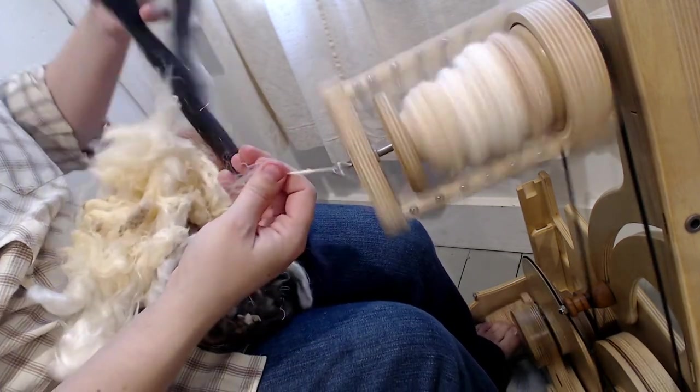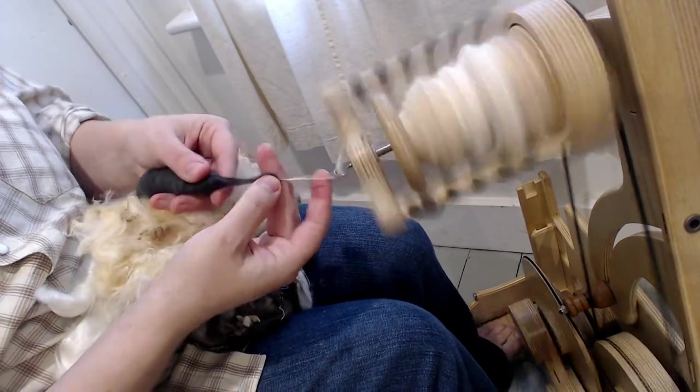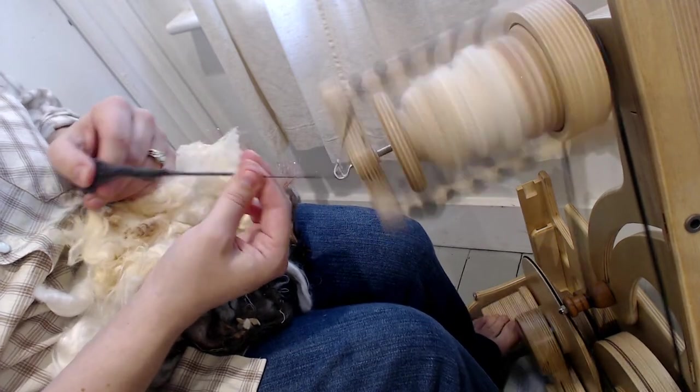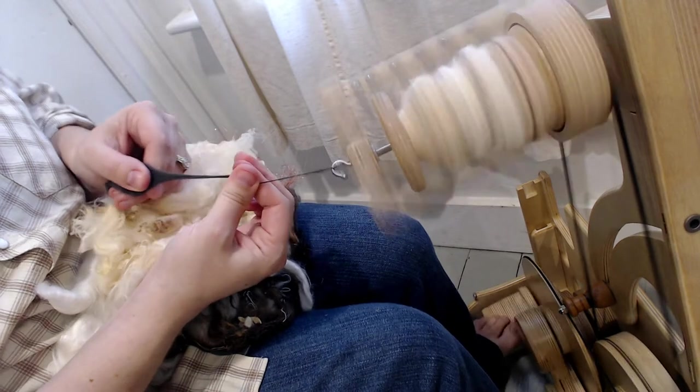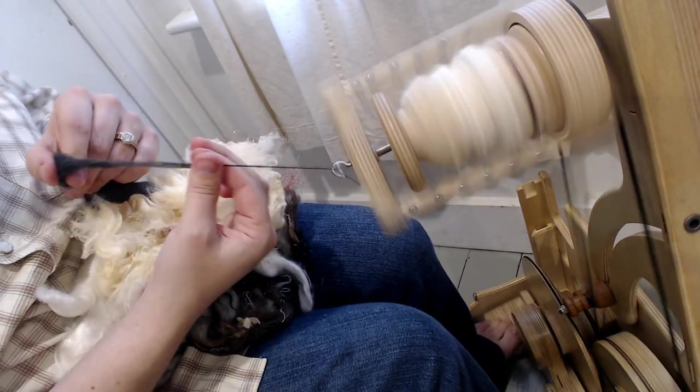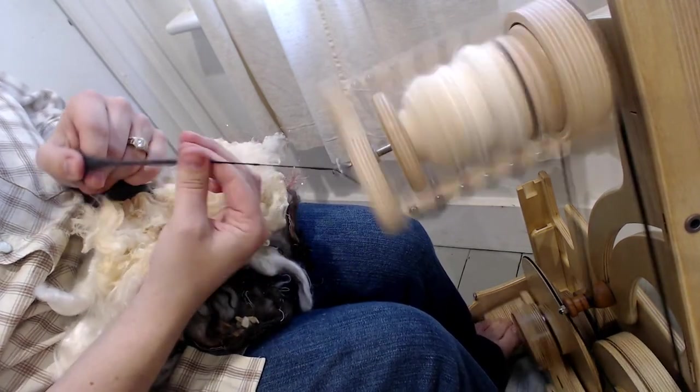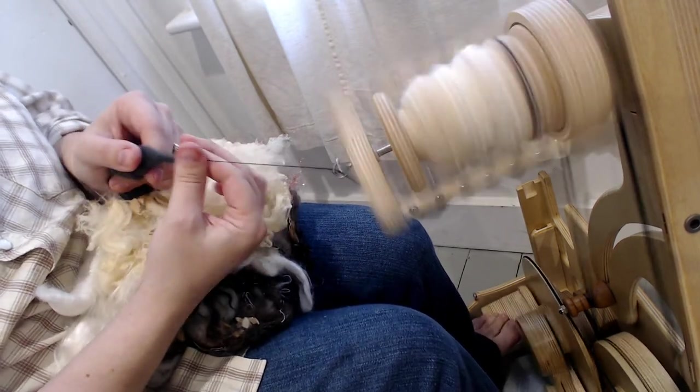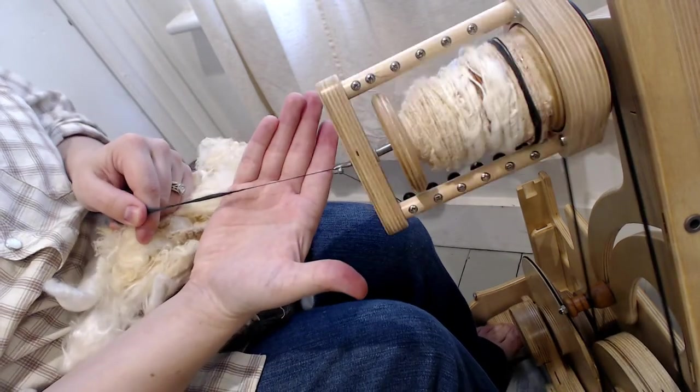So now we'll switch to a rolag. This is carbonized bamboo and rolags are very easy to spin fine because they're already processed. They've already been kind of combed out so all the fibers in one direction. And I love that there's still a little bit of variance in the direction of the fiber which gives it some grab and ease to spinning. Nice and fine.